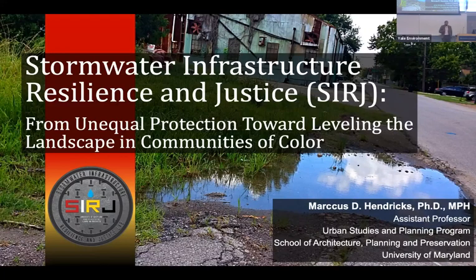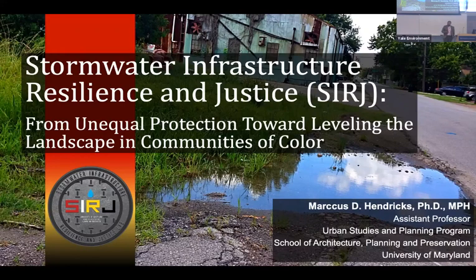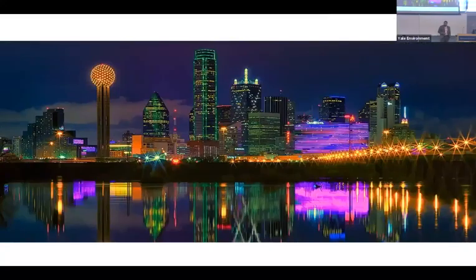Today I want to introduce you all to the work and research program I've started at the University of Maryland with this presentation: Stormwater Infrastructure, Resilience, and Justice — from Unequal Protection Toward Leveling the Landscape in Communities of Color. Within my research lab, we take a social lens to what has largely been studied as a physical planning or engineering problem, unpacking the root causes of issues and the impacts for people who live at the social, political, economic, and environmental margins of our society, particularly in the context of stormwater and infrastructure.